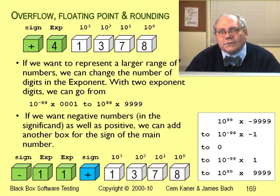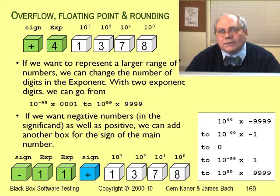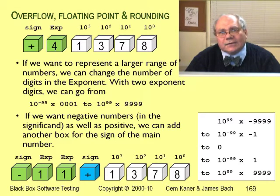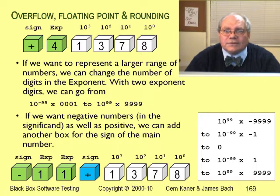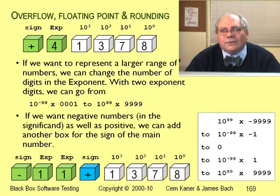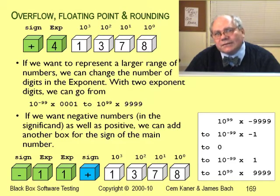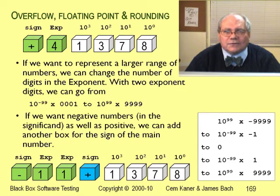There are a few other ways we extend the range of floating point numbers too. Most floating point numbers have more than one digit in the exponent, and floating point numbers can be negative as well as positive. To achieve this in terms of representation, we add another storage box for another sign. This storage box holds the sign of the mantissa, instead of the other sign box which holds the sign of the exponent.